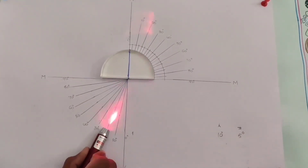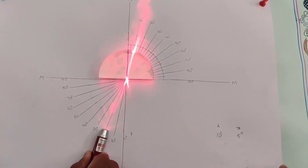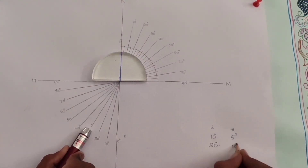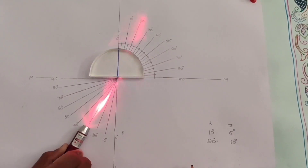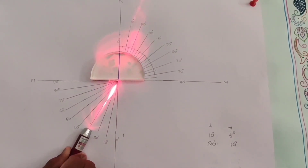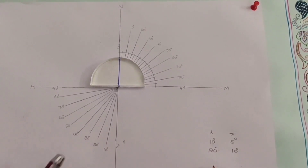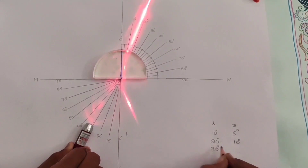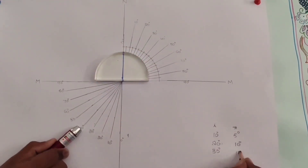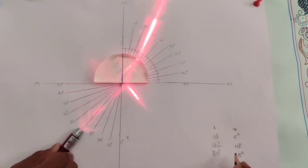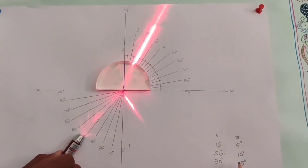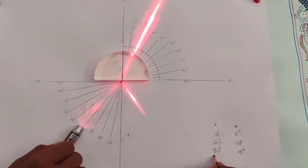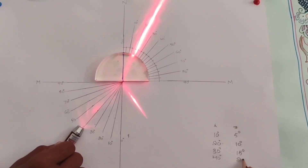We get angle of refraction is 5. Angle of incidence is 20, we get angle of refraction is 10. Angle of incidence is 30, we get angle of refraction is 15. Angle of incidence is 40, we get angle of refraction is 20.